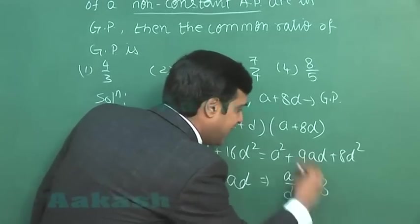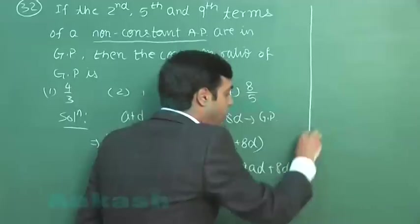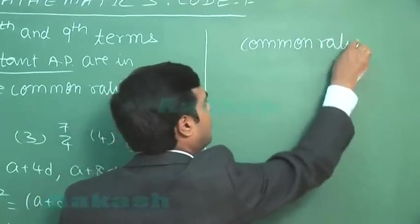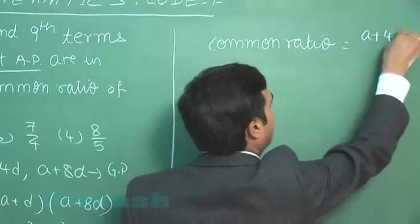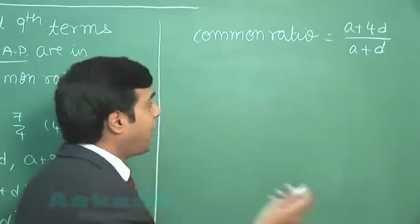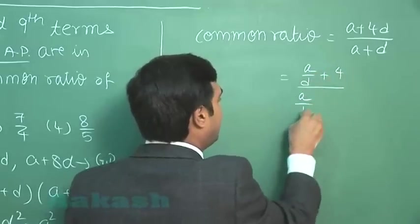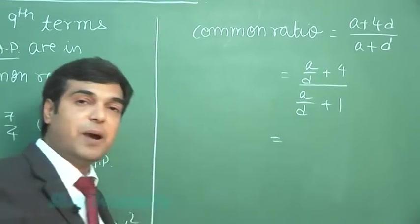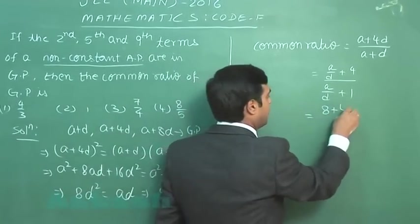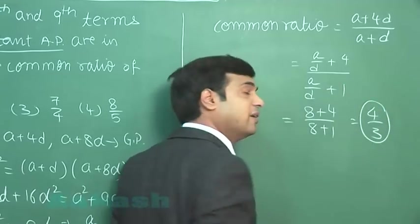We are talking about non-constant AP, so d is non-zero, giving me a by d equals 8. Now the question is asking about the common ratio of GP. So we can write common ratio as second term upon first term of that GP. Dividing with d, we can write (a by d plus 4) upon (a by d plus 1). Substitute the value for a by d as 8, since we obtained it earlier. We get (8 plus 4) upon (8 plus 1), that is simply 4 by 3.